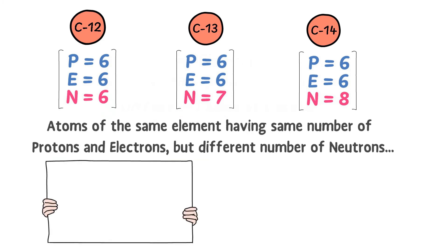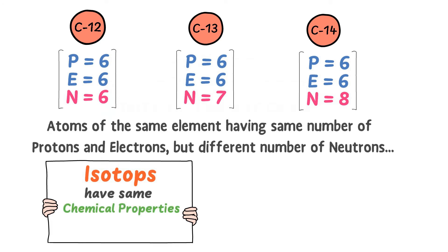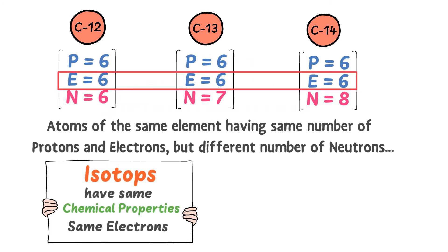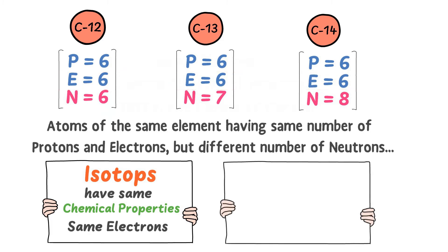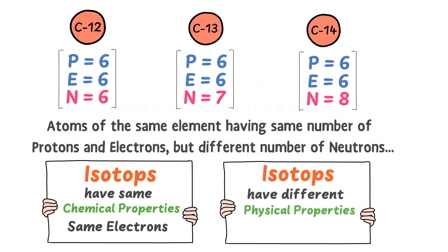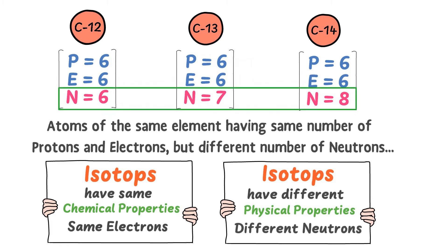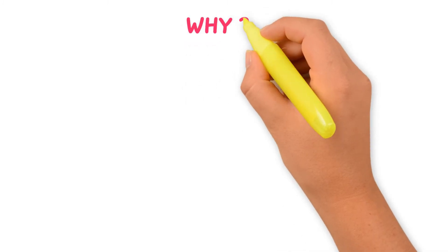Note this important point: isotopes have the same chemical properties because they have the same number of electrons in the outermost shell. Secondly, isotopes have different physical properties because they have a different number of neutrons in the nucleus.